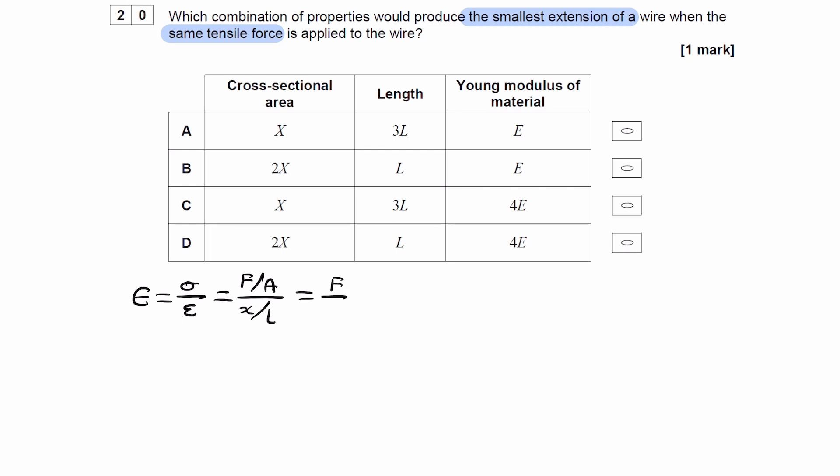This is then force over area divided by extension over length, so I'll just help you simplify this if you're not too sure. This is then force over area times length over extension. That is then F L over A X.